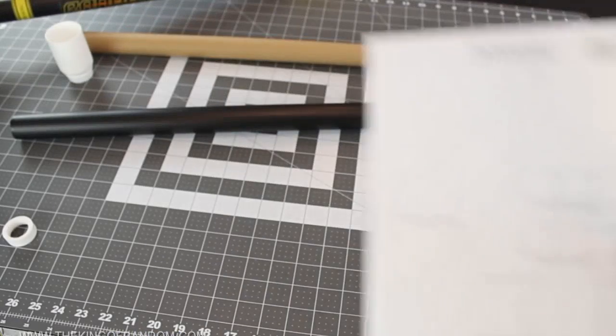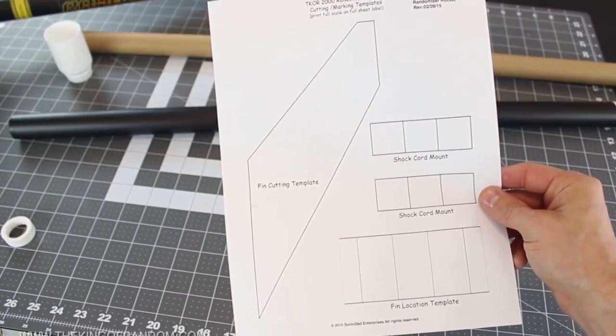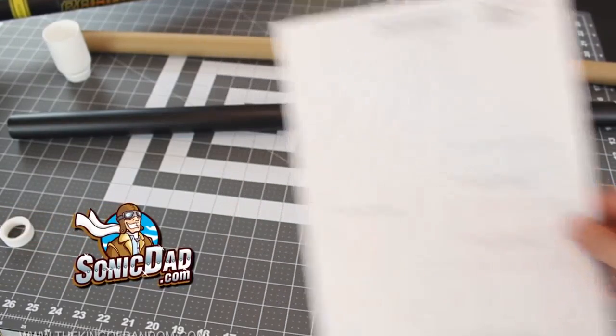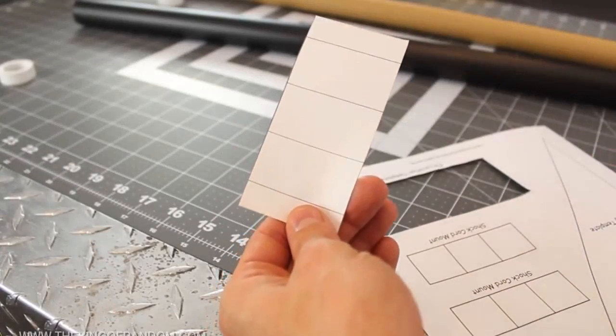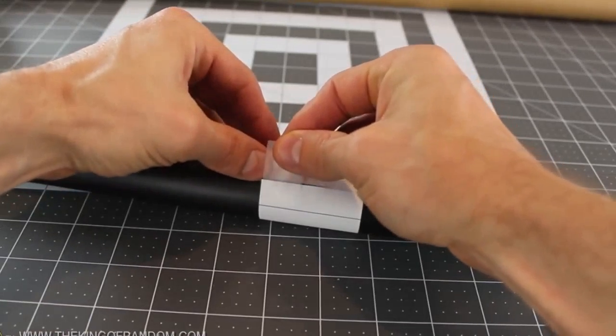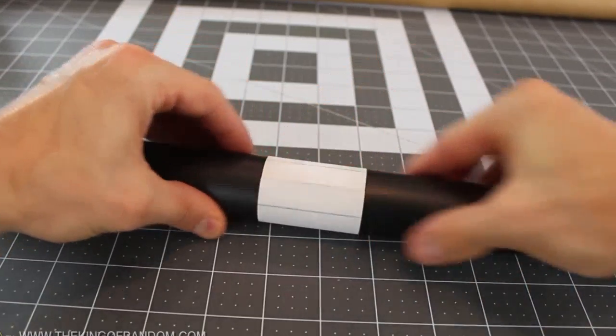Alright the next thing we need is the fin cutting template, which was designed and donated by my friends at sonicdad.com, and I've put a link in the description to where you can get it for free. Go ahead and cut out the fin location template as well, and wrap it around the golf club tube, then tape it so both ends meet perfectly together.